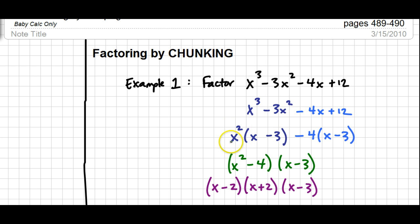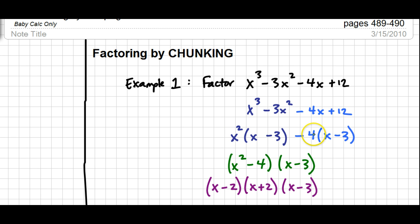Keep in mind you may or may not use the negative sign when factoring out the number, so you may play around with that negative to get the numbers to work out. The thing you get inside the parentheses when you do chunking needs to be identical in both cases. Sometimes you'll pull out a negative, sometimes a positive. Now that I've factored out a GCF from each half, I take x² and negative 4 and turn those into a factor. Because x minus 3 appears in both, I factor out x minus 3, and I'm left with x² minus 4.